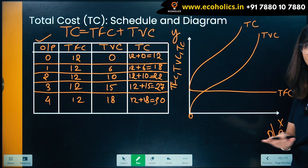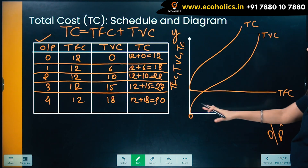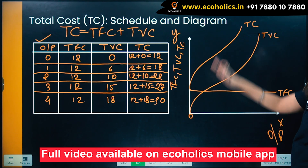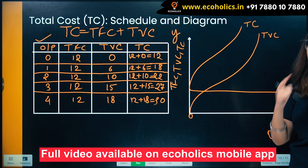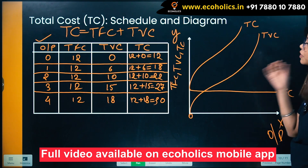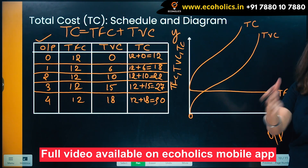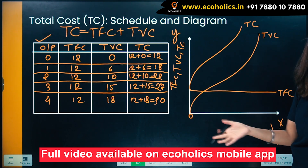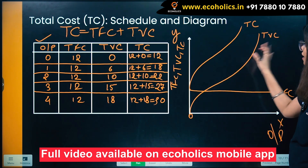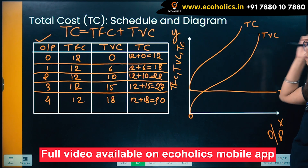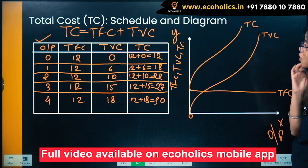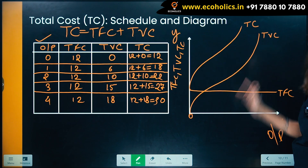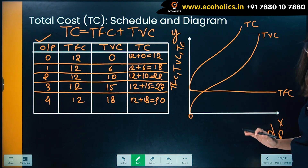This graph shows the relationship between total fixed cost, total variable cost, and total cost. The horizontal straight line is TFC — irrespective of output, it is fixed and you have to bear it. Total variable cost is inverse-S shaped due to the law of variable proportions. Total cost is the addition of TVC and TFC.